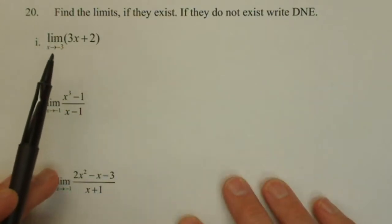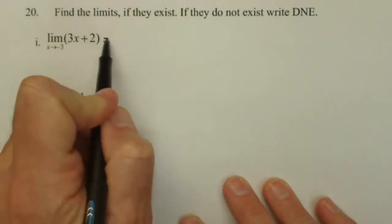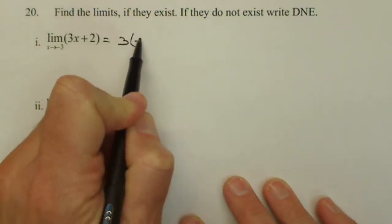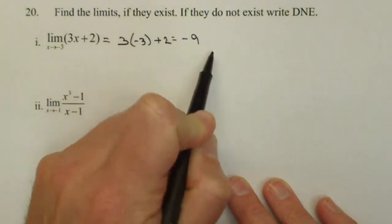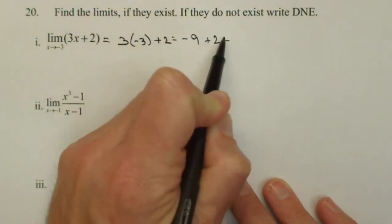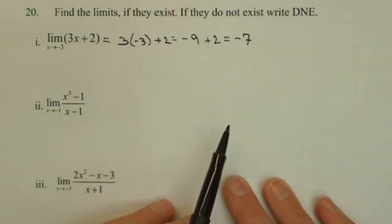So in the first one, we're taking the limit of 3x plus 2 as x approaches negative 3. We're going to plug in negative 3 for x, so 3 times negative 3 plus 2 equals negative 9 plus 2 or negative 7, so our limit exists and it is equal to negative 7.